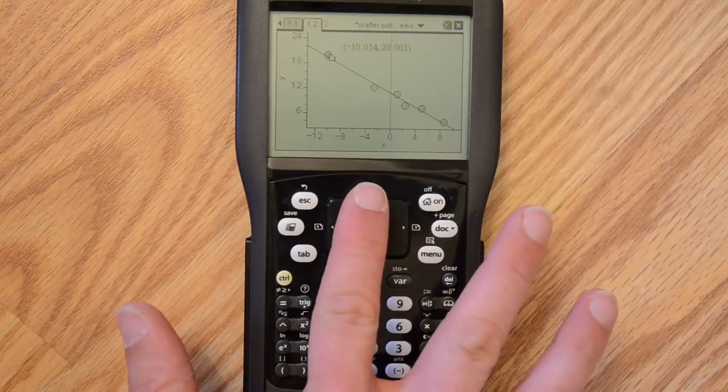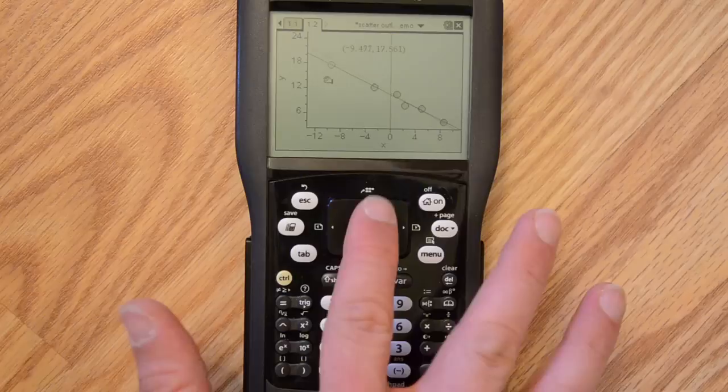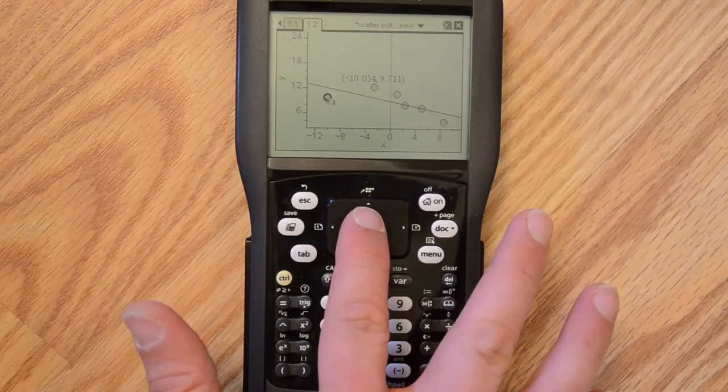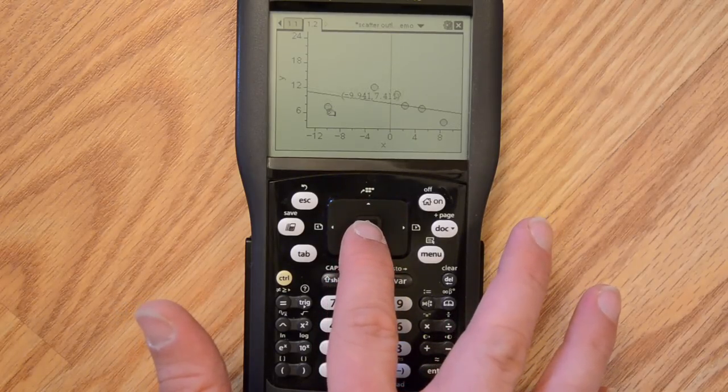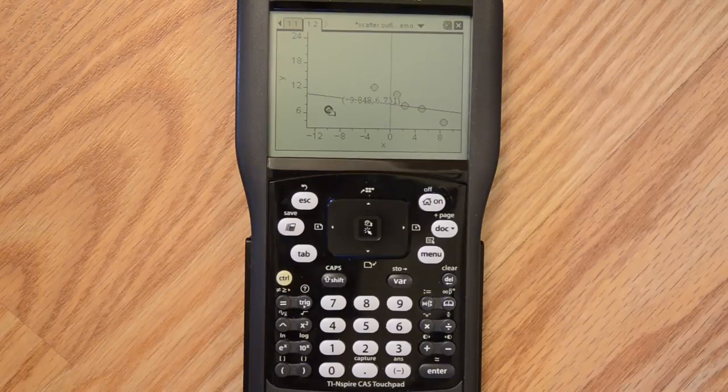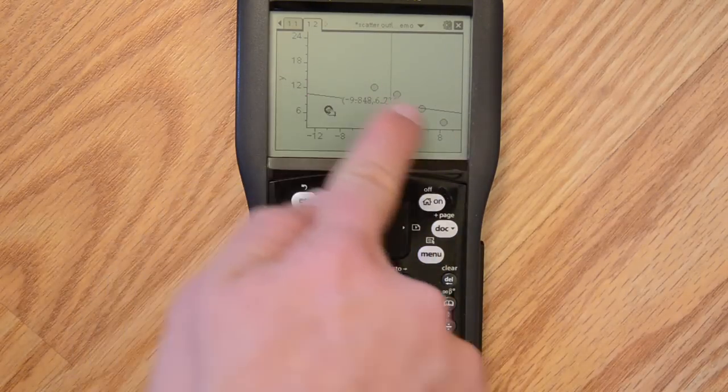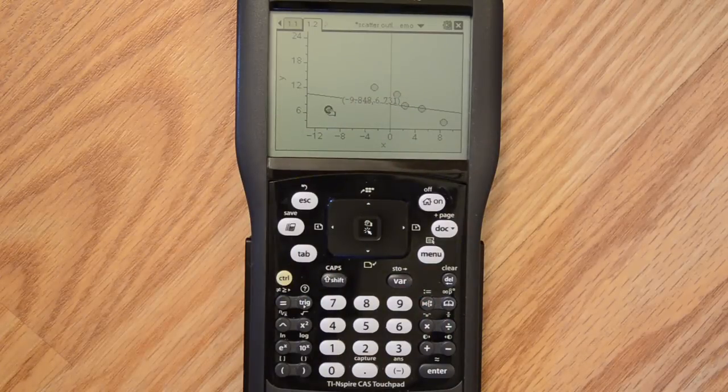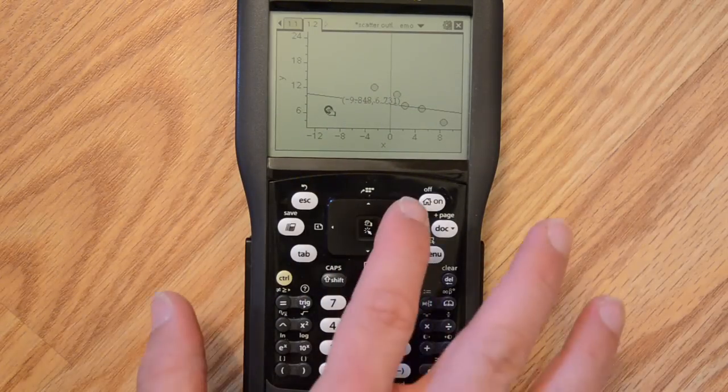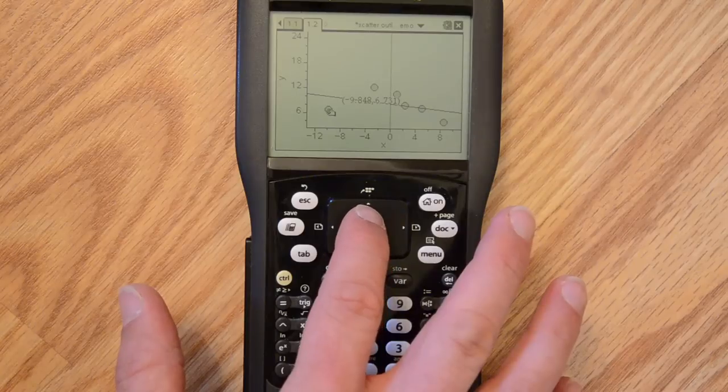If, however, I drag that point down and I make it an outlier in the horizontal direction, now you can clearly see that the line is no longer following - it is not even following the same slope as the other five points. And it is even more strongly affected by that outlier in the horizontal direction than it was in the vertical direction.